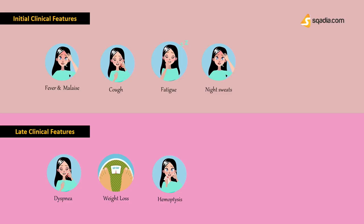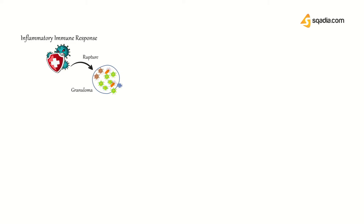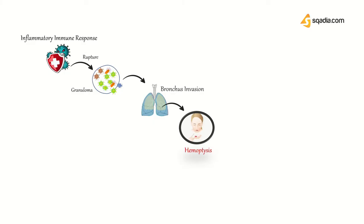We will now discuss some complications in the respiratory system caused by Mycobacterium tuberculosis. As the inflammatory immune response is produced, it leads to granuloma formation. Rupture of these granulomas can cause release of microorganisms. These microorganisms can invade the bronchus, causing rupture of small capillaries, which can give rise to hemoptysis — blood in the sputum.